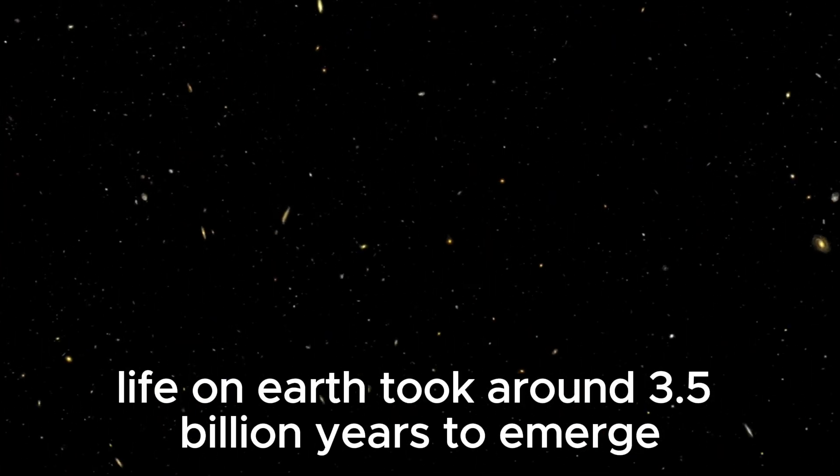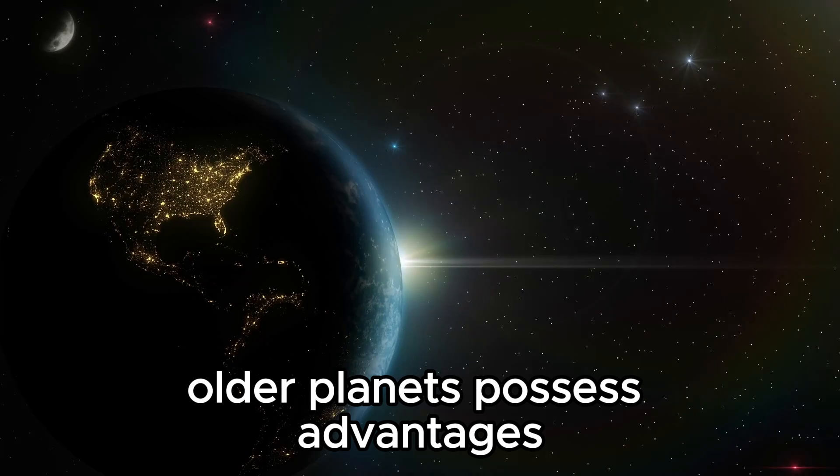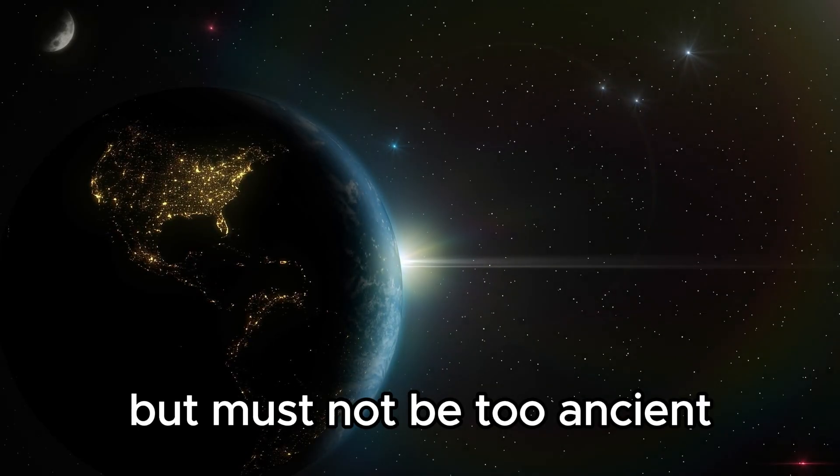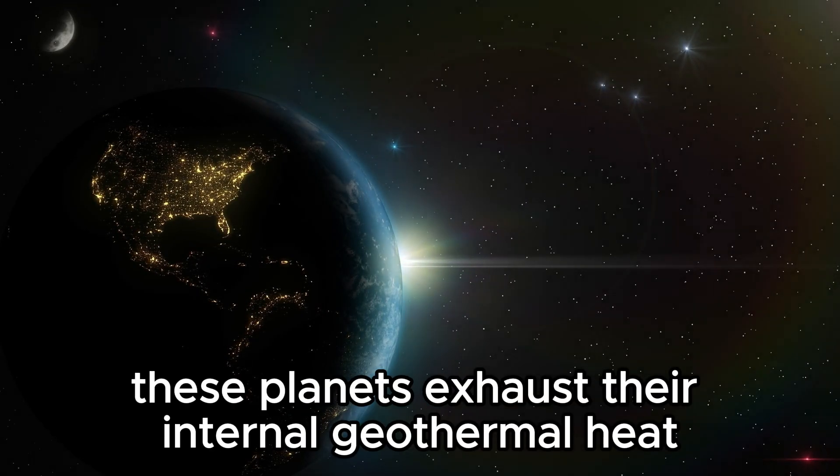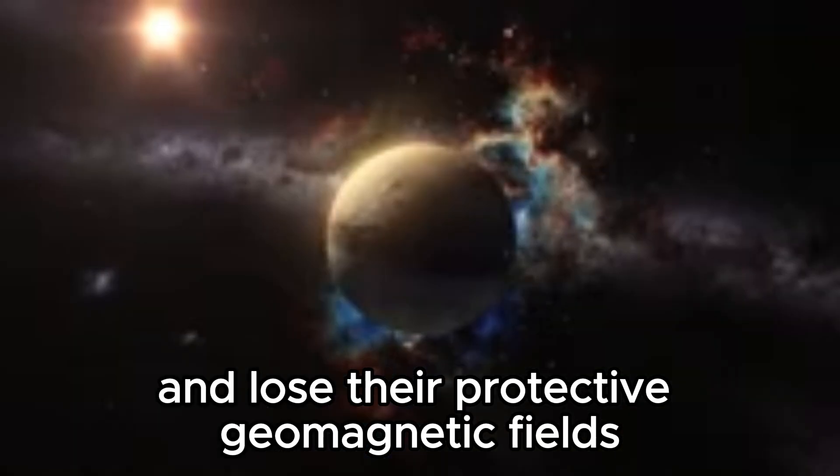Considering that complex life on Earth took around 3.5 billion years to emerge, older planets possess advantages but must not be too ancient. Over time, these planets exhaust their internal geothermal heat and lose their protective geomagnetic fields.